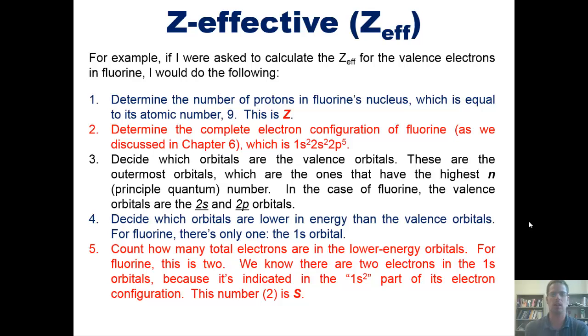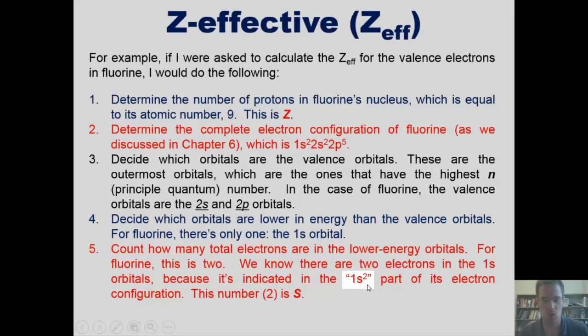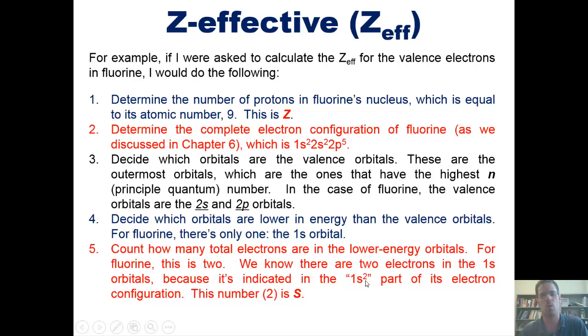Five, we now count how many total electrons there are in the lower energy orbitals. For fluorine, that happens to be 2. We know that there are 2 electrons in the 1s orbital of fluorine because it's indicated in the 1s² part of its electron configuration. So this little 2 right here indicates that in the 1s orbital, that smallest spherical-shaped orbital that's closest to the nucleus of fluorine, there are 2 electrons occupying it. That 2, in this case, is the number S from the equation that I showed you in the previous slide.